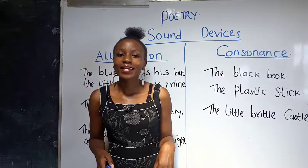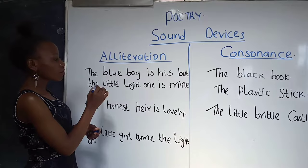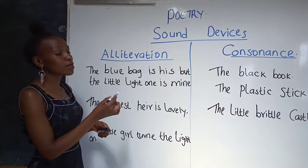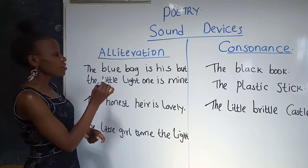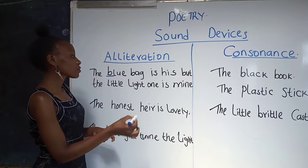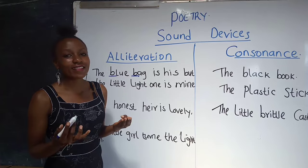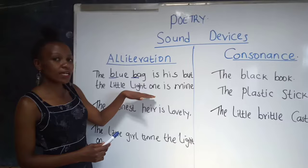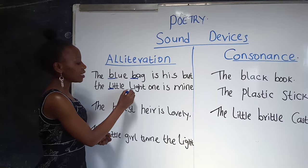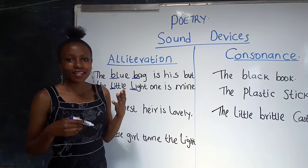I have some examples here on the board: 'The blue bag is his but the little light one is mine.' We're gonna look for consonant sounds which follow each other closely. We have 'blue' and 'bag' — they are the same sound and they follow each other closely, so this is alliteration. And then 'little' and 'light' — those sounds follow each other closely and sound the same, so that is also alliteration.